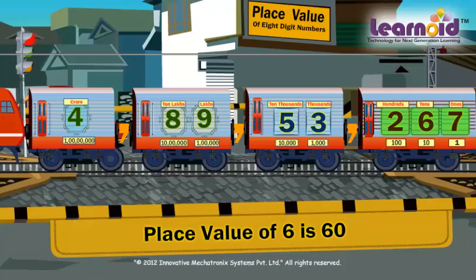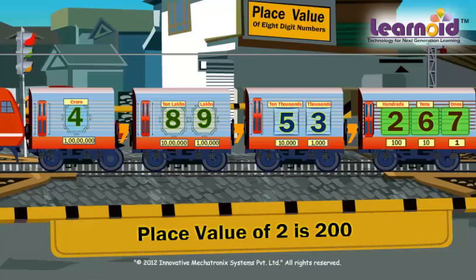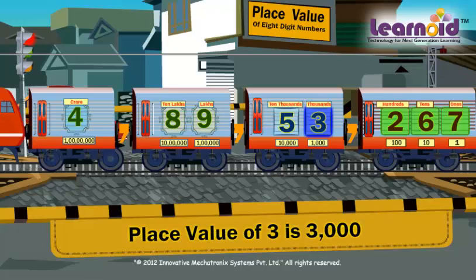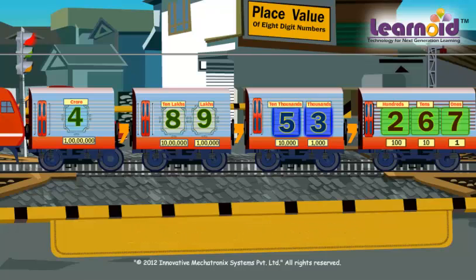Number 2 is in the hundreds window. Its place value is 200. Number 3 is in the thousands window. Its place value is 3000.